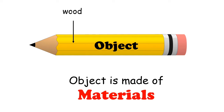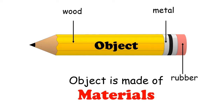Wood — so we have wood in the pencil. What another material do you think we have? Metal. Yes, metal is another material we find in the pencil. What another material do we find? Rubber — very good, that is another material. And that tiny block we use to write is graphite. So pencil is the object, and it is made of materials.